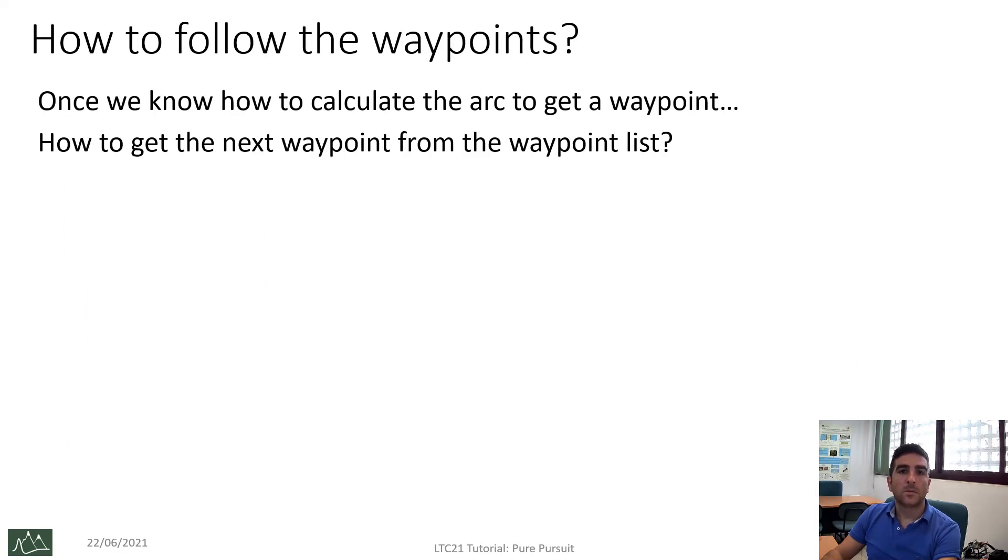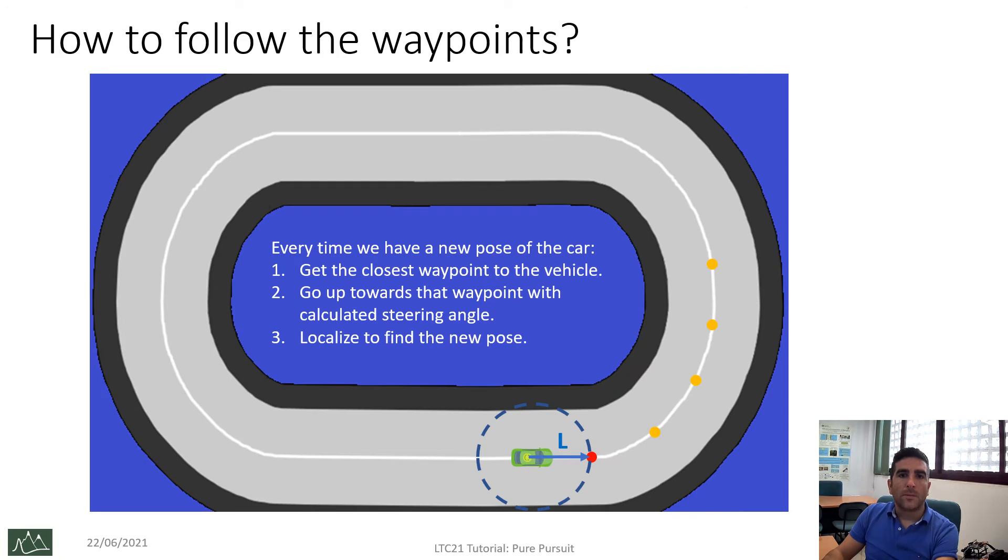Okay, once we know how to calculate the steering angle, how can we follow the waypoints? Well, every time we have a new pose of the car, we have to get the closest waypoint to the vehicle, which is in the look-ahead distance range, and then go up toward that waypoint using the calculated steering angle, and once the car gets the goal waypoint, localize itself to find the new pose and repeat.